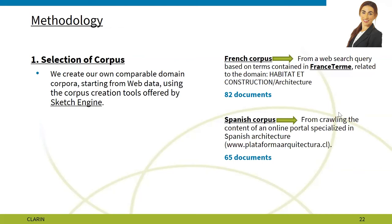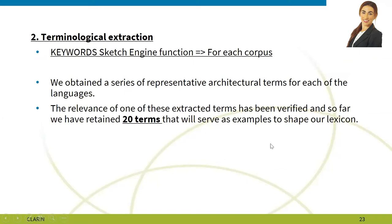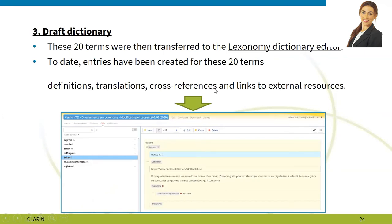For French, we used a search query based on terms contained in a French STEM related to the domain of habitat and construction in architecture, and we formed a French corpus made up of 82 documents. For the Spanish corpus, since an equivalent French term wasn't available, we used Sketch Engine again and crawled the content of an online portal specializing in Spanish architecture, forming a Spanish corpus of 65 documents. We then performed terminological extraction for each corpus using Sketch Engine, obtaining representative architectural terms for each language. We then created a draft dictionary by transferring terms to the Lexonomy dictionary editor. Today, entries have been created for 20 terms, including definition, translation, cross-reference, and links to external resources.